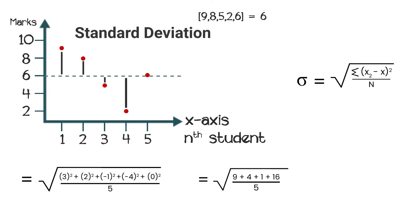Everything divided by 5. So 16 plus 4 is 20, 20 plus 9 is 29 plus 1, 30 divided by 5 should be root 6. This should be our standard deviation.